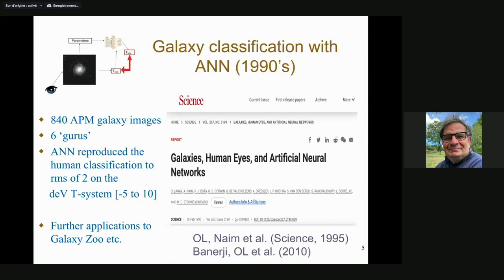The question: what's the delta? The other comment I'll make is somewhat historical. Several times people said the subject started being serious in 2015 with deep learning — just to say that some of us made our attempts already in the early 1990s. My first machine learning paper for galaxies is from 1992 — last century, sorry. This was an attempt where we had 840 images from the APM, six expert classifiers of the time, and we managed to reproduce galaxy type classifications. We also later expanded it for Galaxy Zoo.